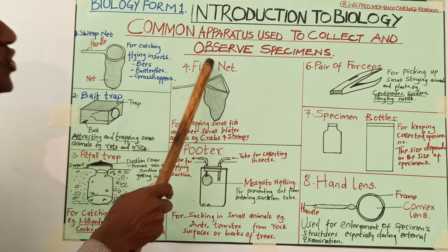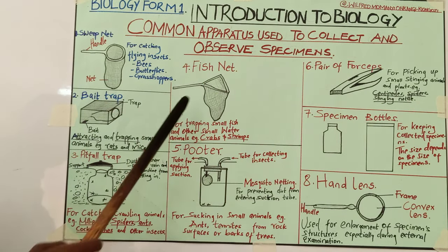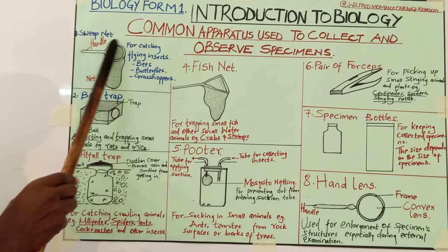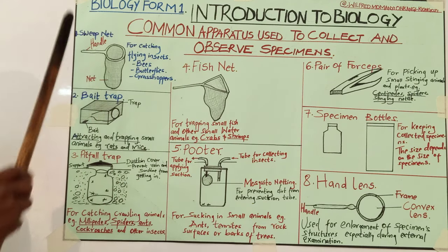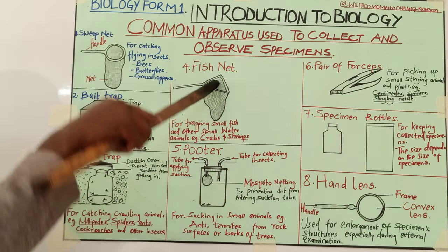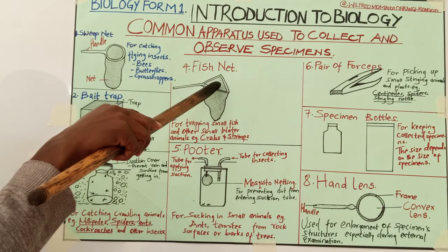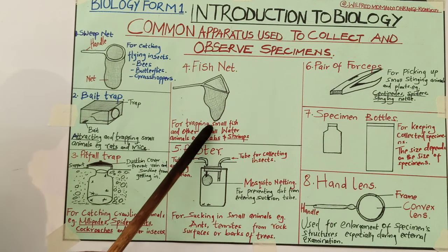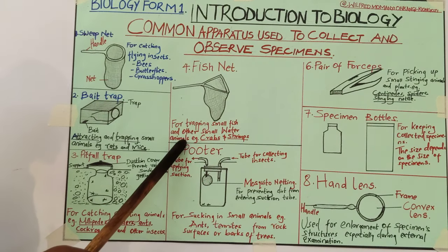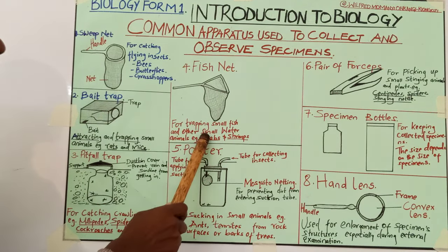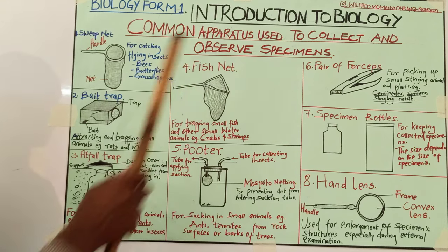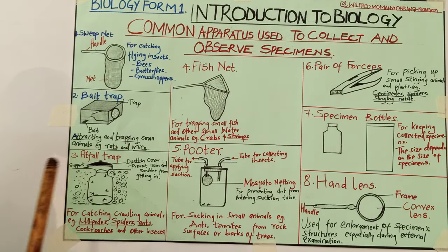Number four is the fish net. The fish net also looks like the sweep net but there is a slight difference on its top. It has a handle and a space in which the specimens you are collecting will enter. It is used for trapping small fish and other small water animals, for example crabs and frogs.